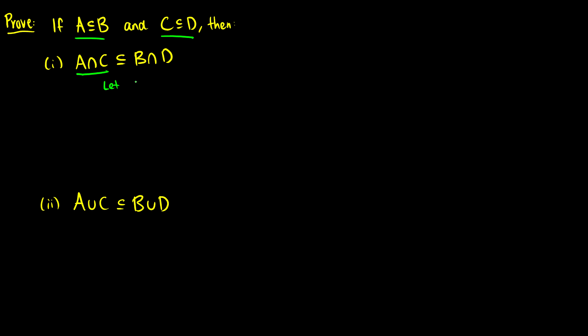And our first assumption is going to be that some element is in A intersection C. So we're going to say, let X be in A intersection C. So what does this mean in English terms? This means that X is in A and X is in C. And this is just by definition. So here's the thing. We know that A is a subset of B and C is a subset of D. So if X is going to be in A, then we know that X has to be in B. And if X is in C, then X has to be in D. So now if we use the definition, we know X is in B and X is in D. So that must mean that X is in B intersection D. And there you go. There's our proof.